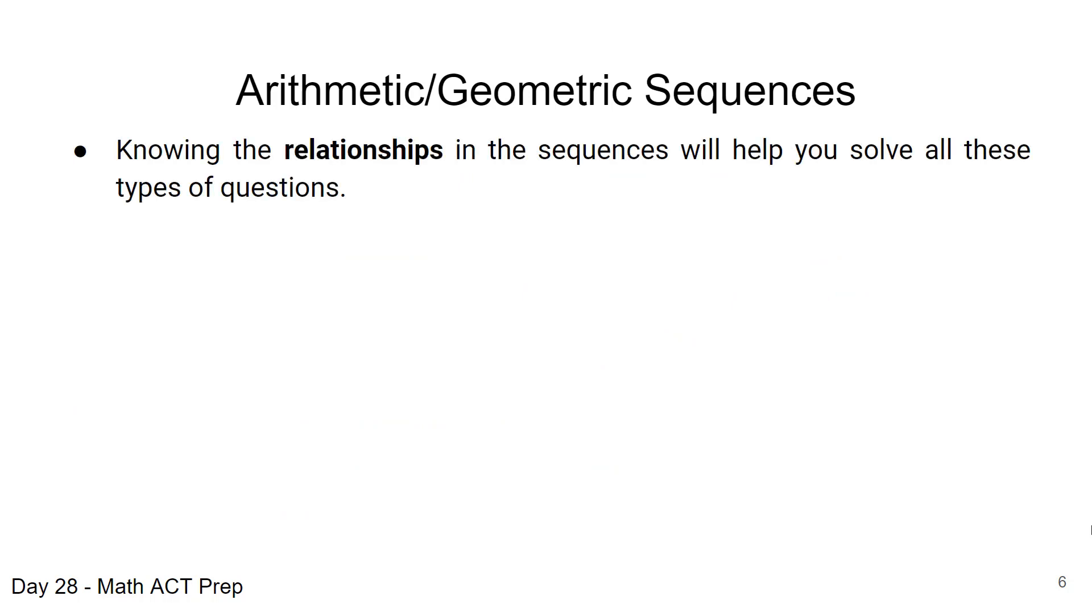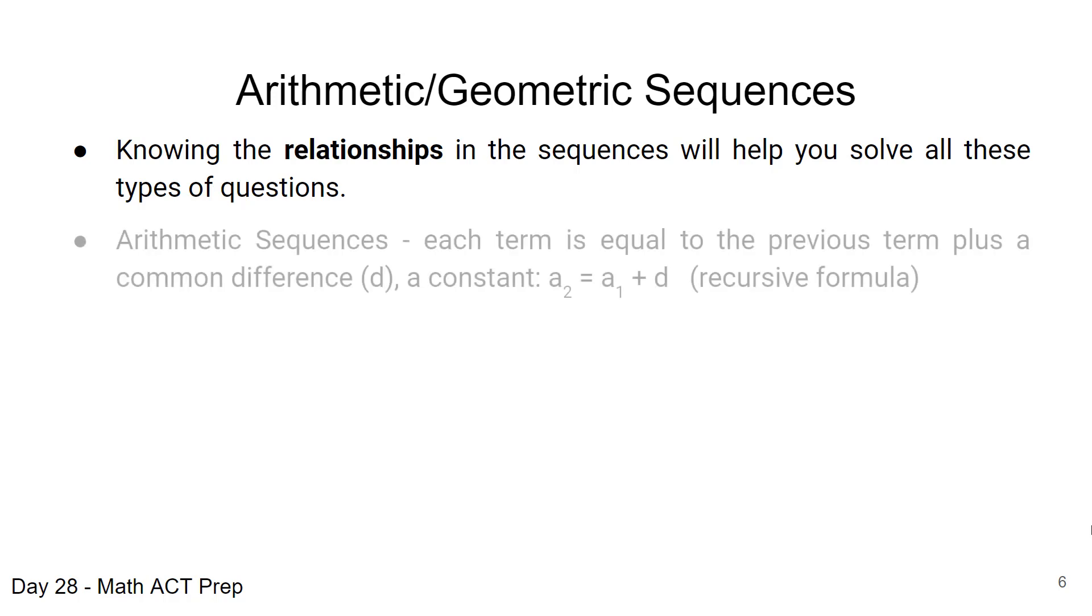So let's take a look at what we have to do. We have to know the relationships in the sequence to be able to answer any of these types of questions, finding the pattern. With an arithmetic sequence we know that each term is equal to the previous term plus some kind of common difference. We're going to use d to represent that and this is what we give as our recursive formula. I point that wording out right there because recursive formula, that term was actually used in one of the ACT tests and I don't want that to confuse you.